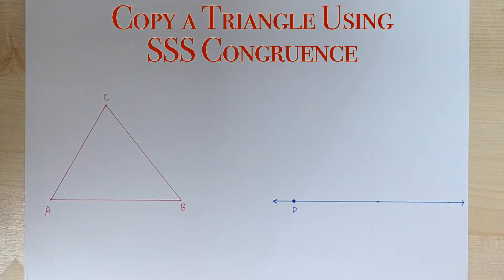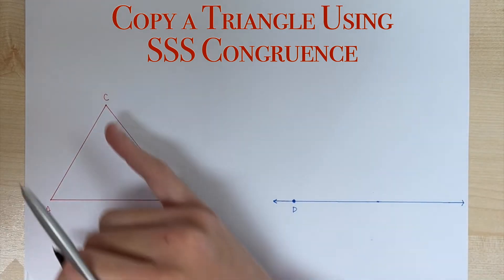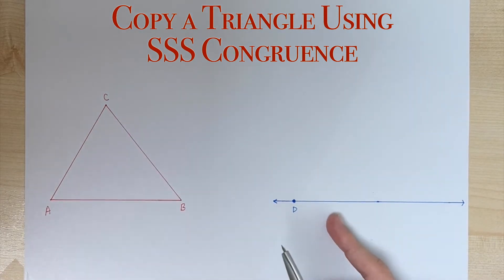Hello everyone, in this construction video we are going to learn how to copy a triangle using the SSS or side-side-side congruence theorem. We're going to start off with this triangle ABC and we are going to copy it over to this line which has point D, and it's going to give us triangle DEF.